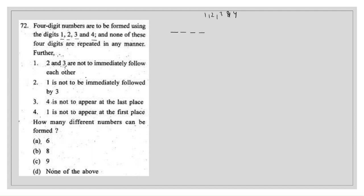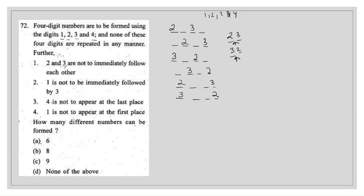Further, 2 and 3 are not to immediately follow each other, which means the number cannot have 2-3 or 3-2 in adjacent positions — there should be at least one digit between digits 2 and 3. So the patterns we can form with 2 and 3 are: 2_3, _23_, 32_, and _3_2 — giving us the valid arrangements of 2 and 3.